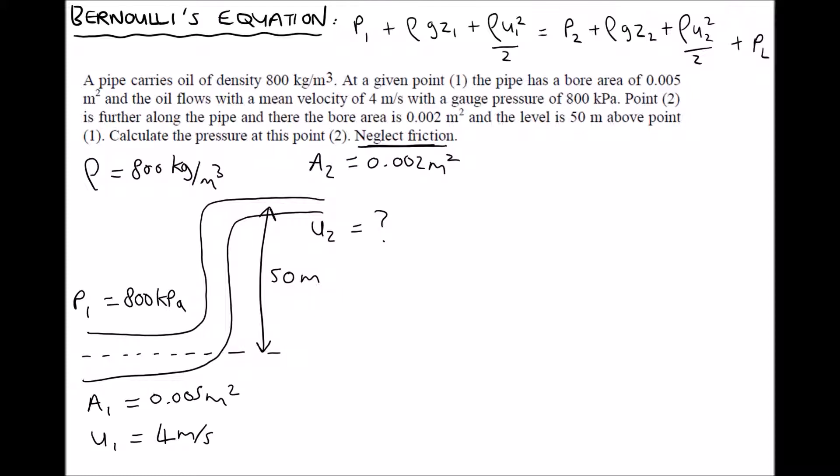So first of all then, let's see what terms we can get rid of. We have Bernoulli's equation at the top. Moving from left to right, P1, well, we have a value of P1 given. So we can't lose that term. Next, we have the term rho GZ1. Well, if we use position 1 as our datum, then the elevation of position 1 is 0. The elevation of position 2 relative to position 1 is 50 meters. So it makes sense to set Z1 to 0. So we can get rid of that term.